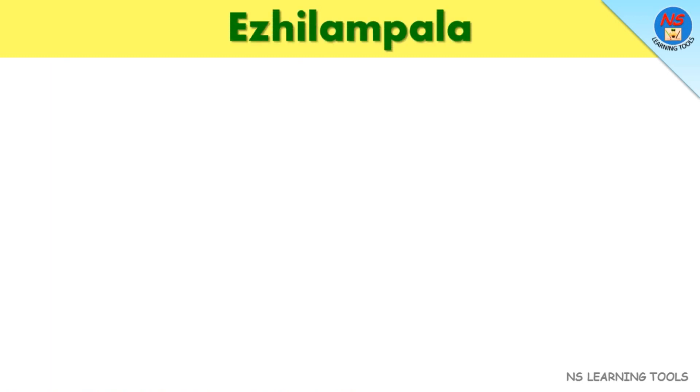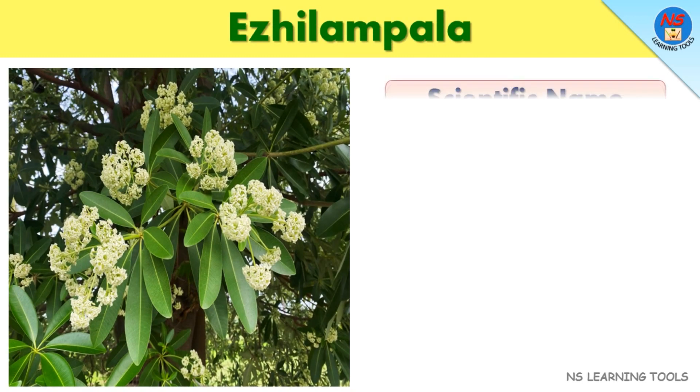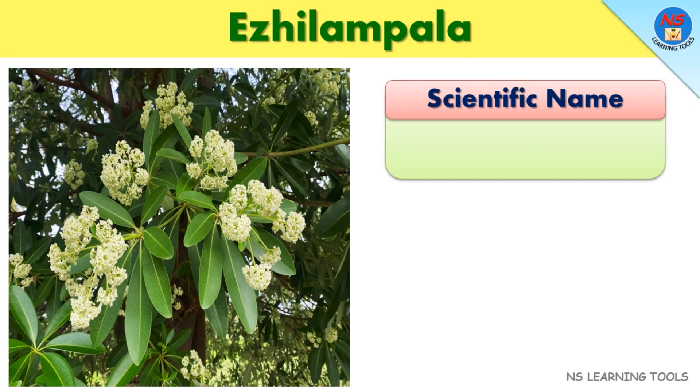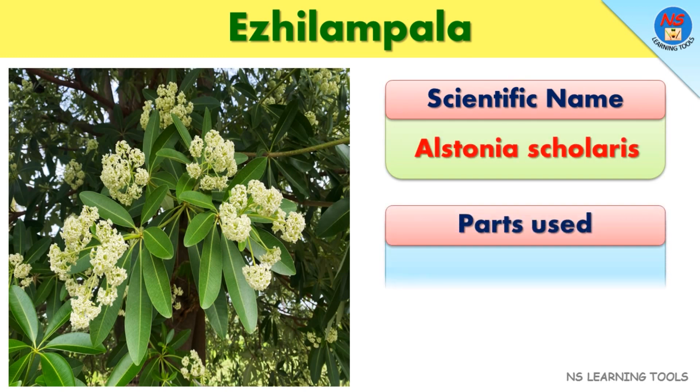Eshilampala. Scientific name: Alstonia scolaris. Parts used: Bark.